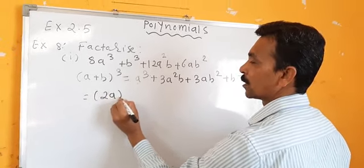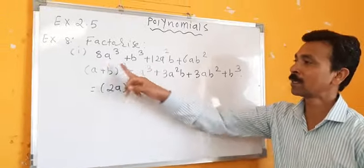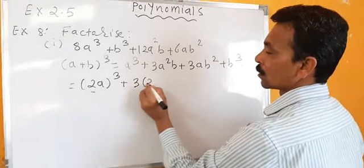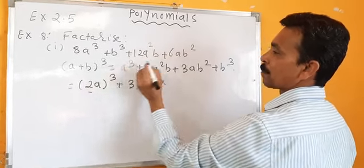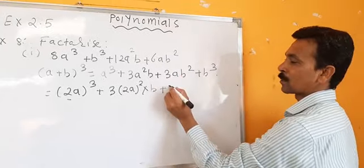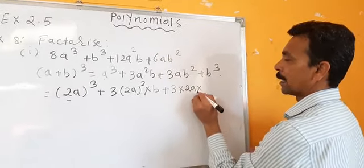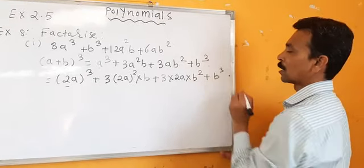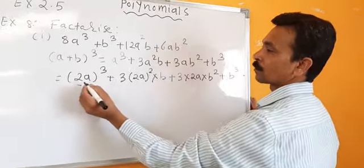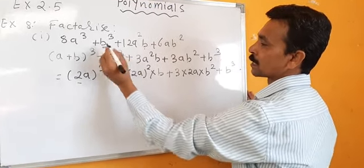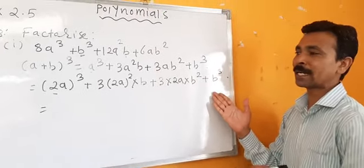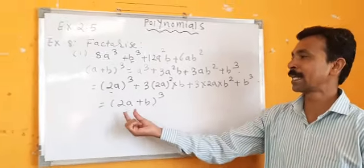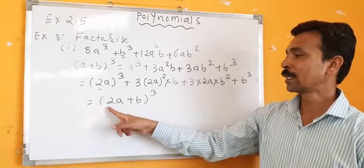8a cube: 8 is the cube of 2, so 8a cube is (2a) cube. Plus 3A squared B means 3 into (2a) squared into b. Plus 3AB squared means 3 into 2a into b squared. Plus b cube means b cube. So this looks like A plus B whole cube, where A is 2a and B is b.